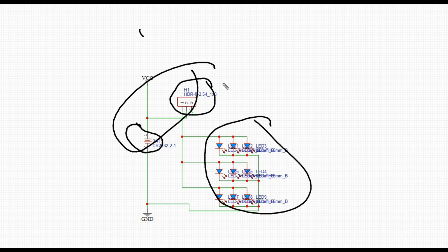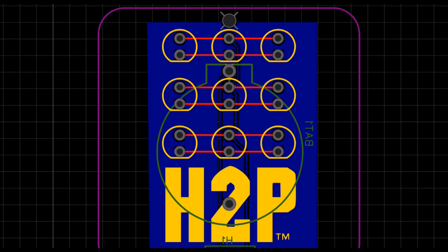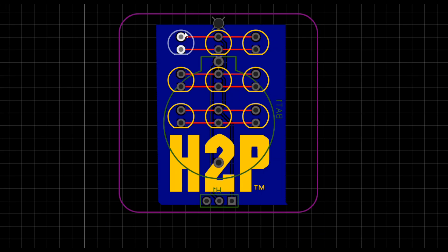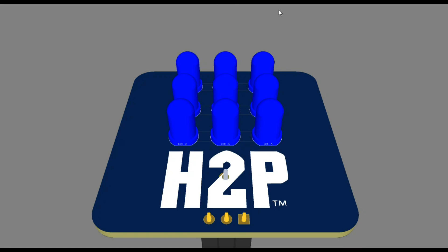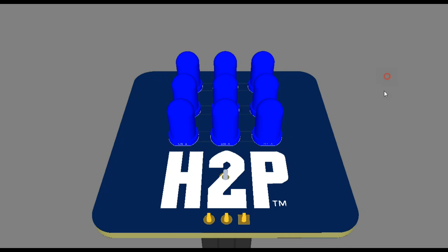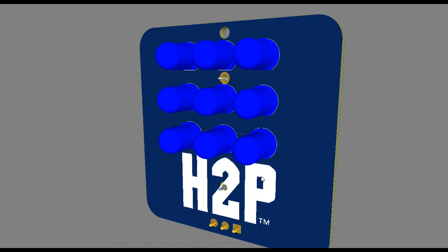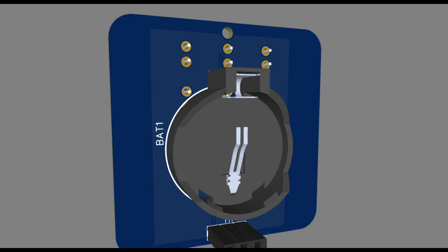The battery and the switch will go on the back side. LEDs will go on the front side. Let's pop over here and we can take a look. There's our layout. You can see everything's in parallel. And there is our 3D view, the front side and the back side.